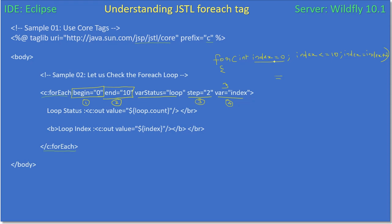The variable is index. You can see how it is mapping: begin equal to 0 is mapped to index equal to 0, then end equal to 10 maps to the loop condition, and we are saying end equal to 10. We are giving the values 0 and 10, then varStatus is stored in loop, and step equal to 2 is mapped to the increment.